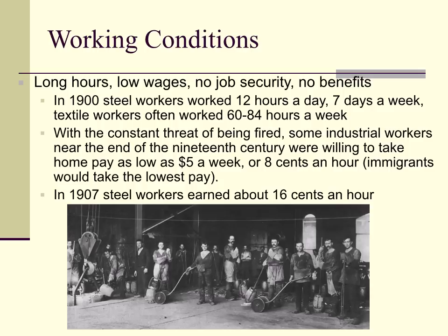That's a lot of work. With the constant threat of being fired, some industrial workers near the end of the 19th century were willing to take home pay as low as $5 a week — that's $5 a week for 12 hours a day, 7 days a week, or about 8 cents an hour. Immigrants often took the lowest pay because they were competing for jobs. By 1907, steel workers earned about 16 cents an hour.